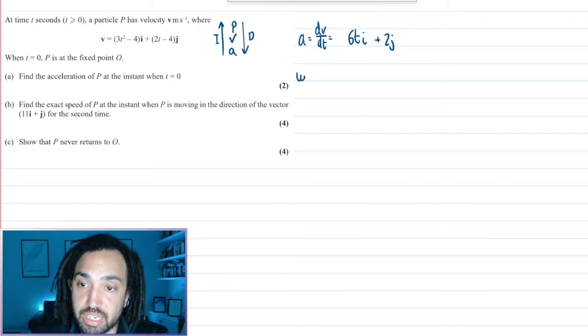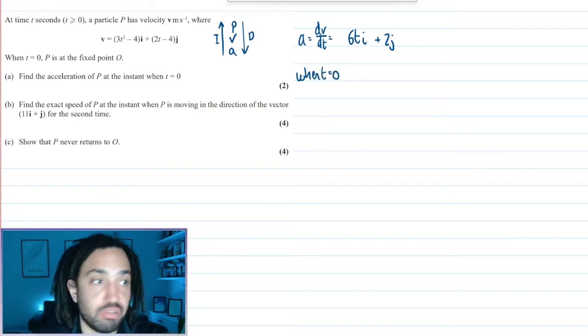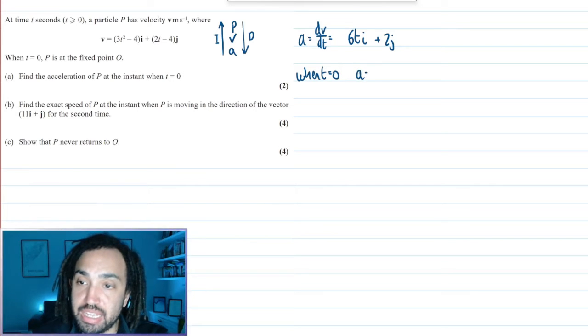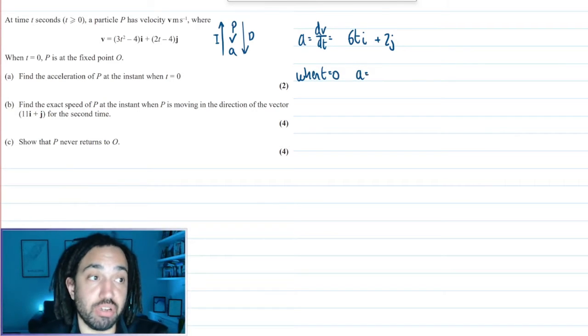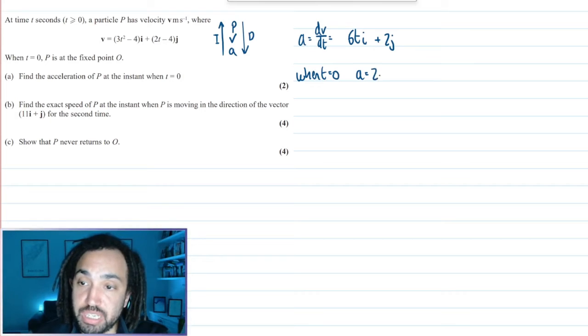And then I can say when t equals 0, a, well the 6t will be 0 so there will be no i component so it will just be 2j.